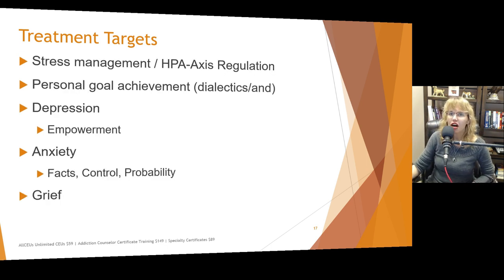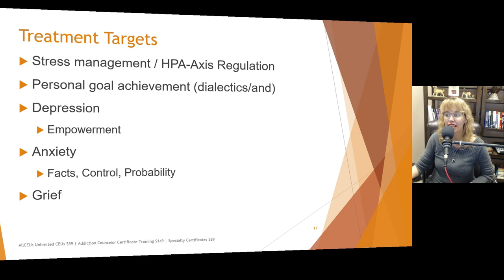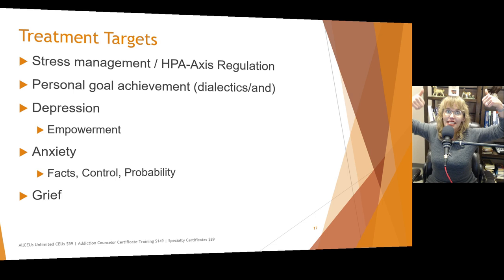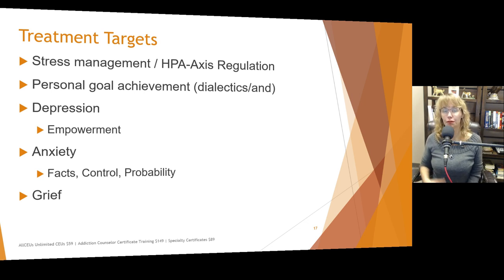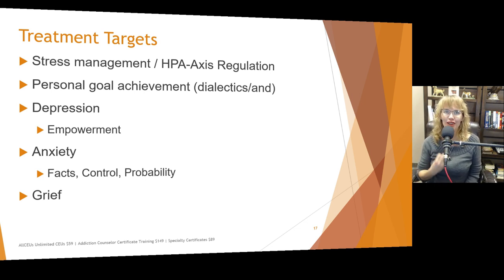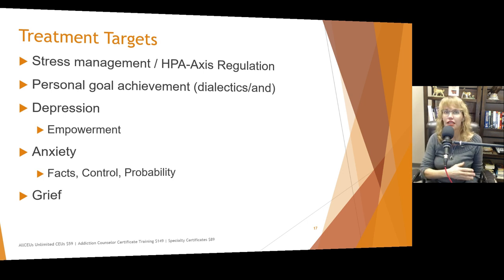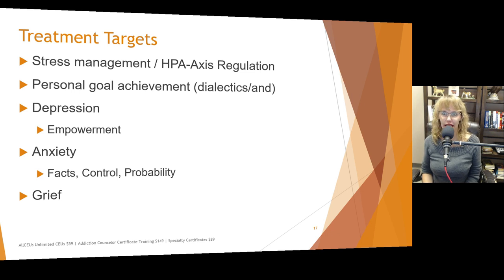Treatment targets also include stress management and HPA axis regulation. When that HPA axis goes up, blood sugar gets dumped. Stress management is super helpful — helping people develop really good distress tolerance skills so they're not having blood sugar dumps 15 to 20 times a day.